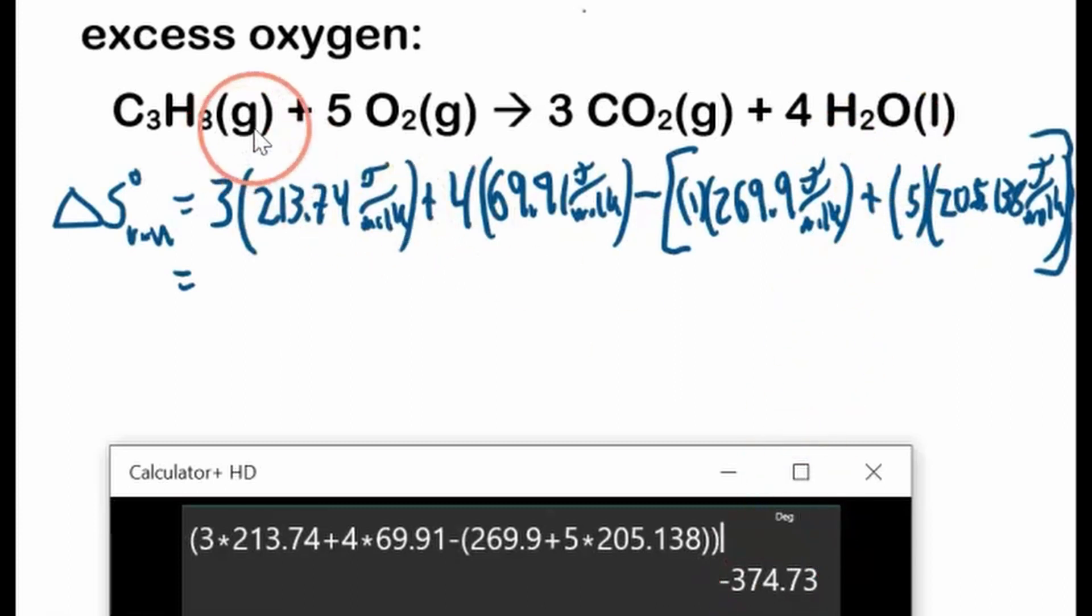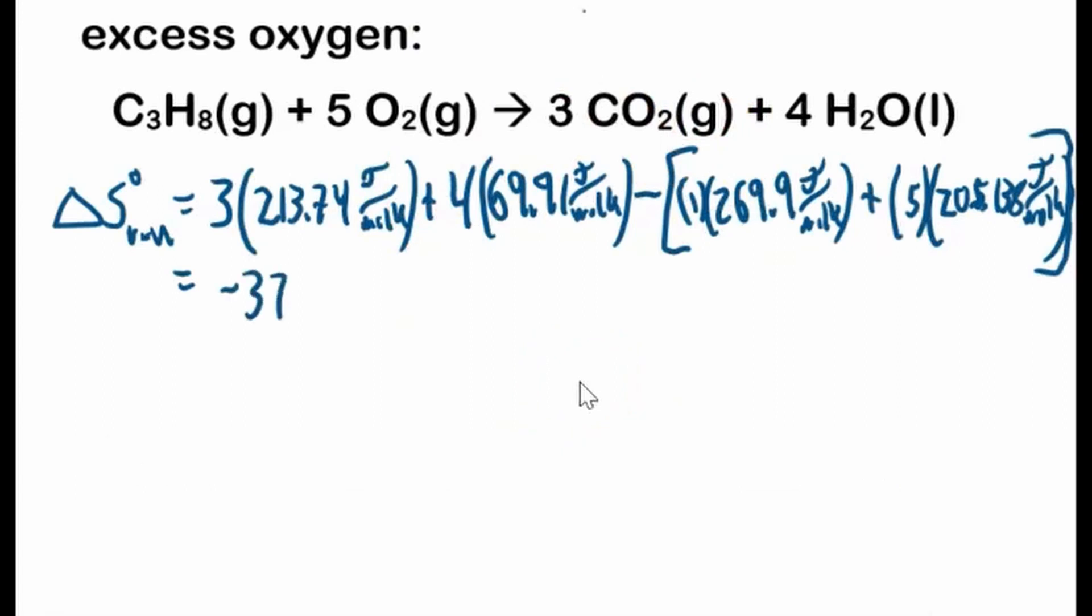Okay, so it's negative, and we're going from kind of 6 moles of gas, for every 6 moles of gas that react, we only get 3 moles of gas, and here we have a condensed liquid, so we have a decrease in entropy. If you're not sure why that's decreased, I do have a video on that, but we'll continue going on, so negative 374.73, so negative 374.73 joules per mole kelvin.